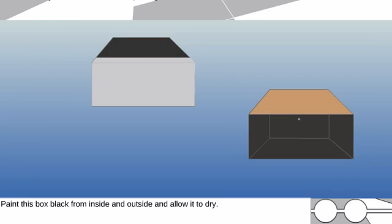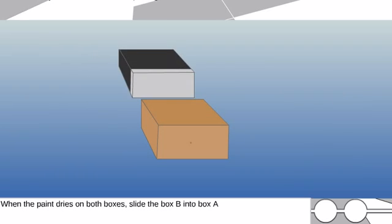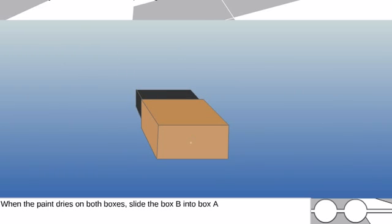This tissue paper acts as screen of the pinhole camera. Paint this box black from inside and outside and allow it to dry. When the paint dries on both boxes, slide the box B into box A. Your pinhole camera is ready.